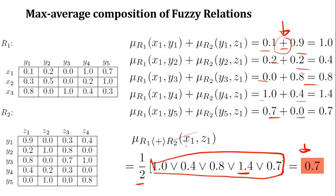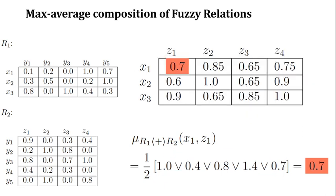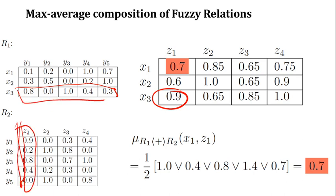So 0.7 indicates the max-average composition between X1 and Z1. If you want to calculate this for X3 and Z1, you take the third row and the first column. By applying the same technique, you can do the rest of the calculations.